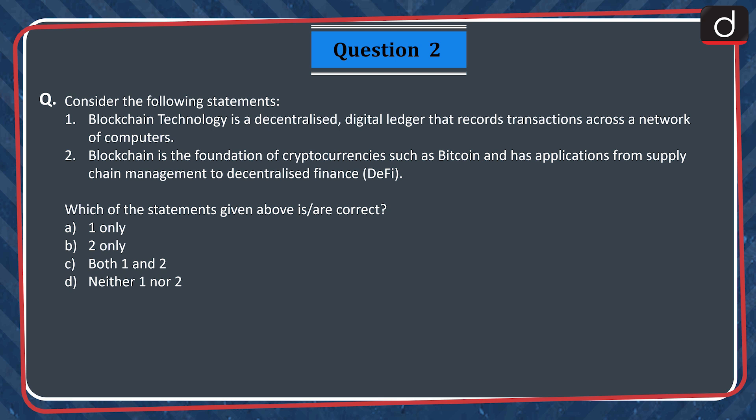Question 2. Consider the following statements. 1. Blockchain technology is a decentralized digital ledger that records transactions across a network of computers. 2. Blockchain is the foundation of cryptocurrencies such as Bitcoin and has applications from supply chain management to decentralized finance (DeFi). Which of the following statements is correct? A. One only. B. Two only. C. Both one and two. D. Neither one nor two.